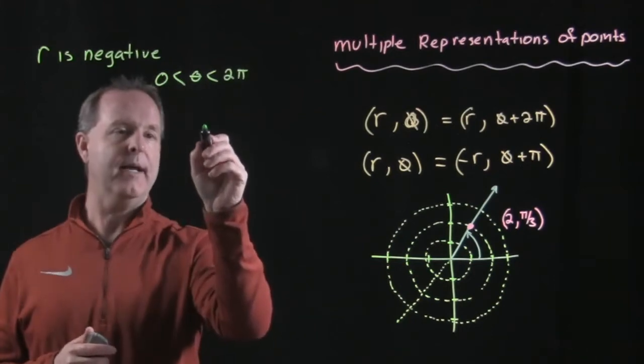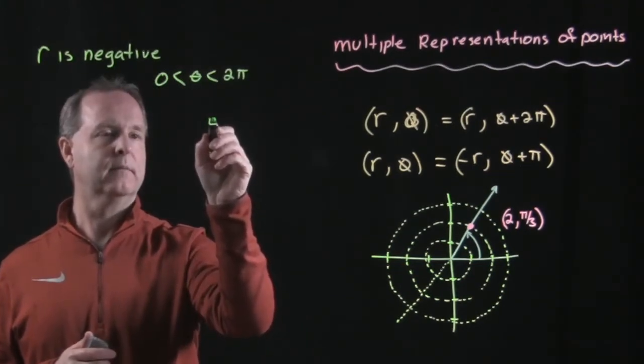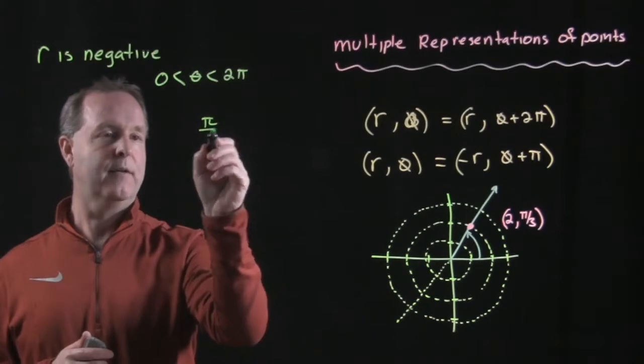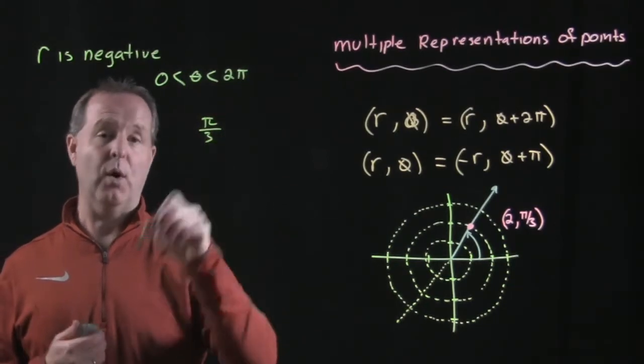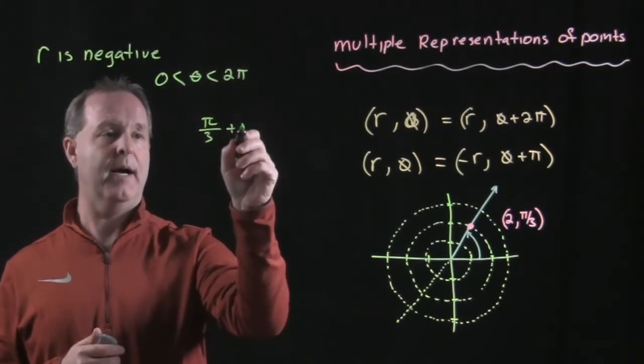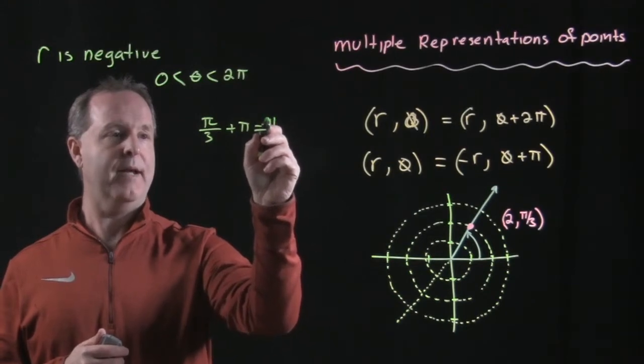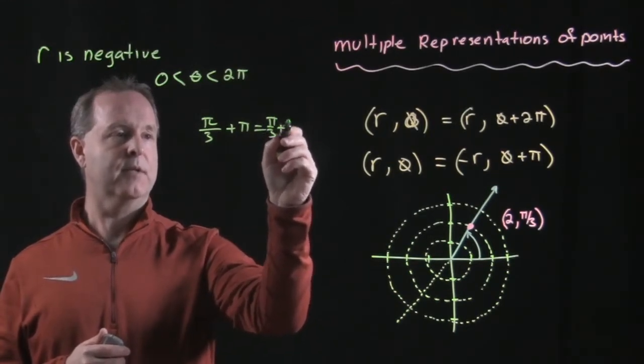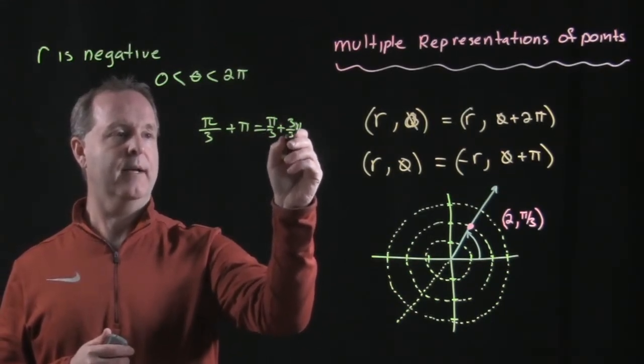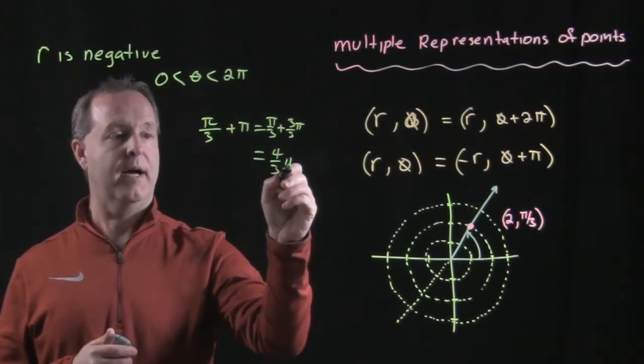So π/3, add π to that, that's going to be equal to π/3 plus 3π/3, which equals 4π/3.